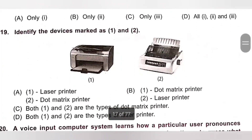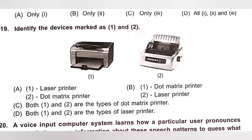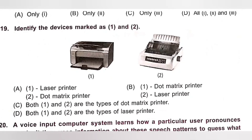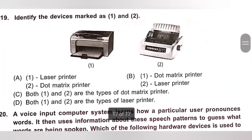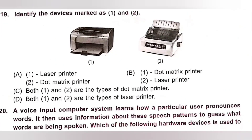Question 19: Identify the devices marked as 1 and 2. A. 1 is laser printer, 2 is dot matrix. B. 1 is dot matrix, 2 is laser printer. C. Both are dot matrix. D. Both are laser printer. The device marked as 1 is a laser printer and the device marked as 2 is a dot matrix printer. Option A is the correct answer.